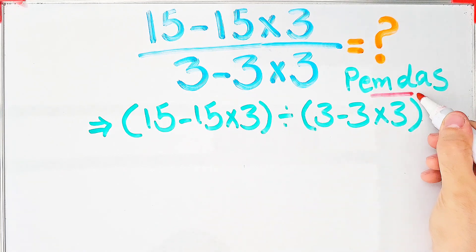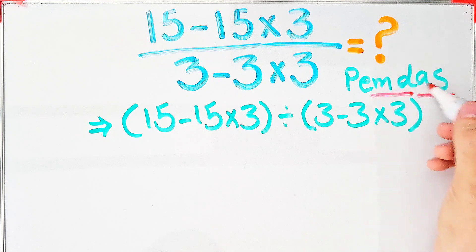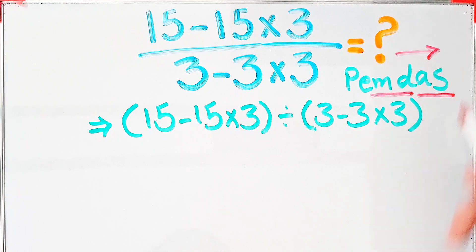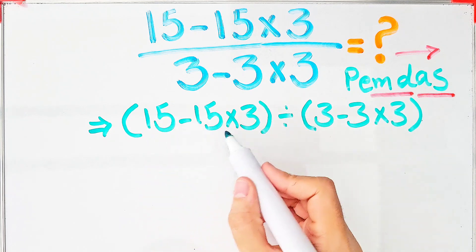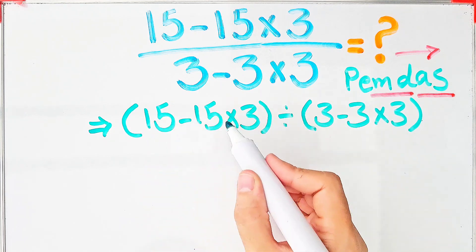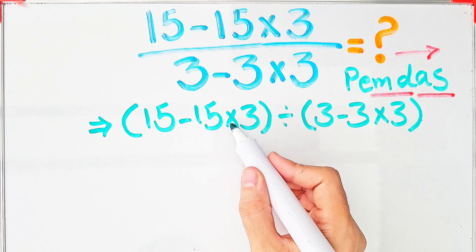Multiplication and division have the same level of priority, as do addition and subtraction. When we have both, we start from the left and simplify. According to the PEMDAS rule, first we simplify these parentheses. Inside these parentheses, we have subtraction and multiplication.